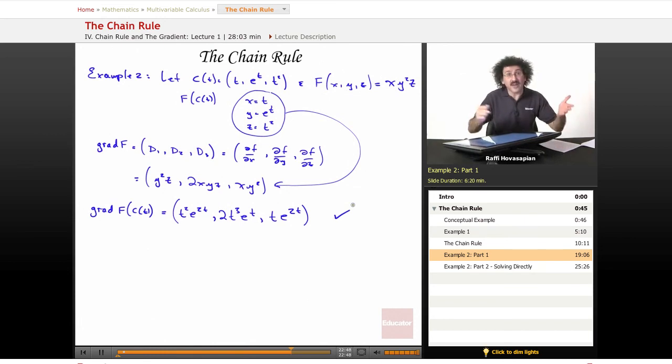Now I just have to find C prime. Well, that's really simple. C prime of T. Well, here's my C right here. I'll just take the derivative of each one. That's it. The derivative of t is 1. The derivative of e^t is e^t. And the derivative of t^2 is 2t.